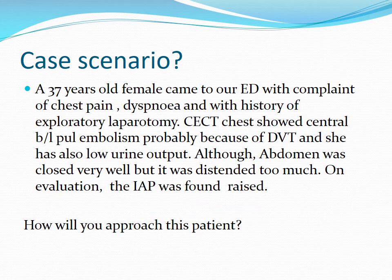Before starting, I will present a case scenario. A 37-year-old female came to our emergency department with complaints of chest pain, dyspnea, and history of exploratory laparotomy. CT chest showed central bilateral pulmonary embolism, probably because of deep vein thrombosis, and she also had low urine output. Although the abdomen was closed, it was distended and intra-abdominal pressure was raised. So how will you approach this patient? This case relates to raised intra-abdominal pressure, and we should know that whenever intra-abdominal pressure is raised, our next step is to open the abdomen to avoid abdominal compartment syndrome.